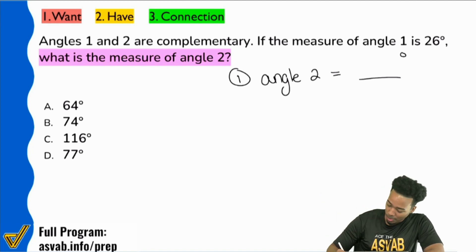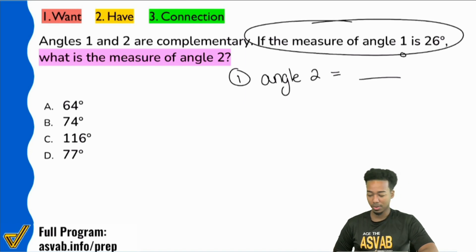And then they say that the measure of angle one is 26 degrees. Now notice where that information is. It says if the measure of angle one is this, that's an automatic giveaway that that information for angle one is definitely related to angle two. They're saying, if this is the case, what happens here? So that information is going to help you find what you need to find.